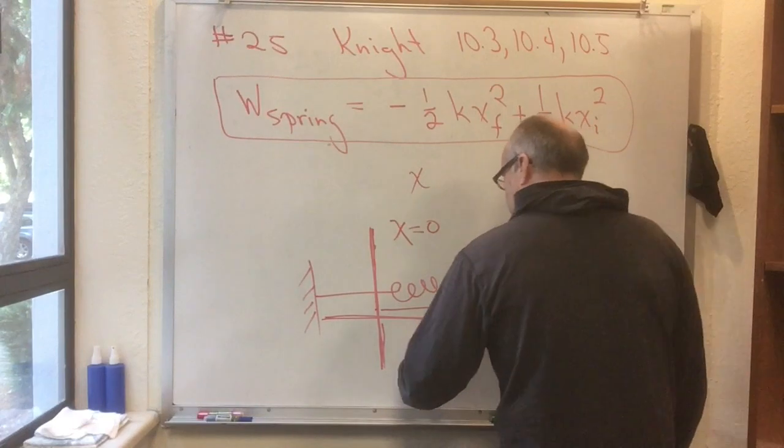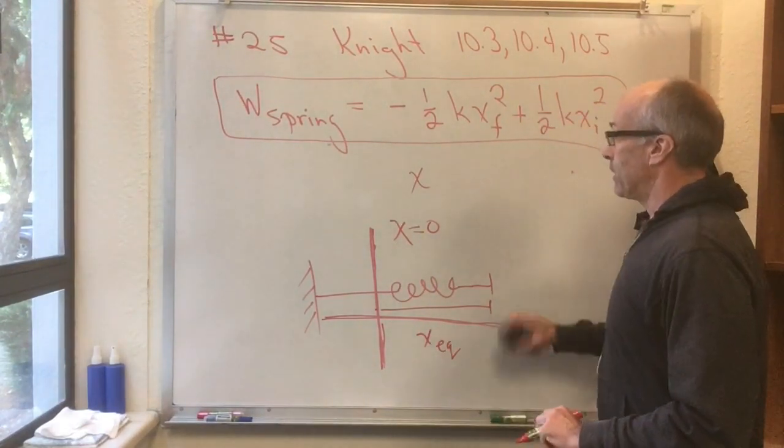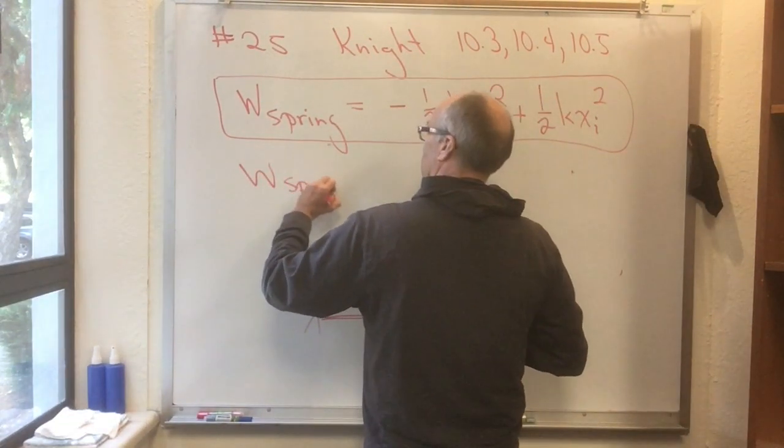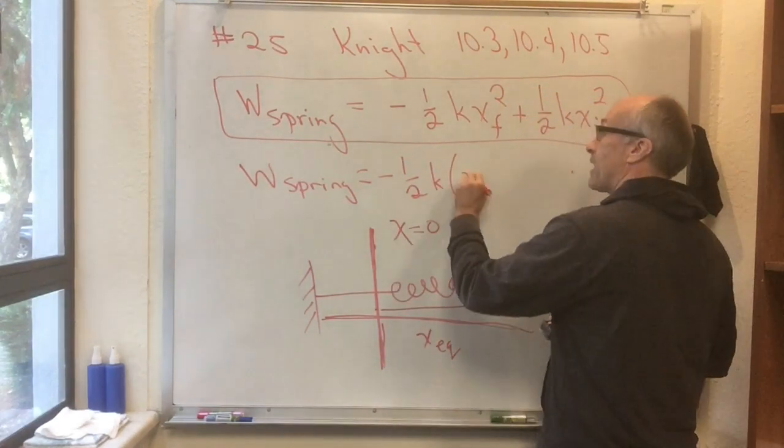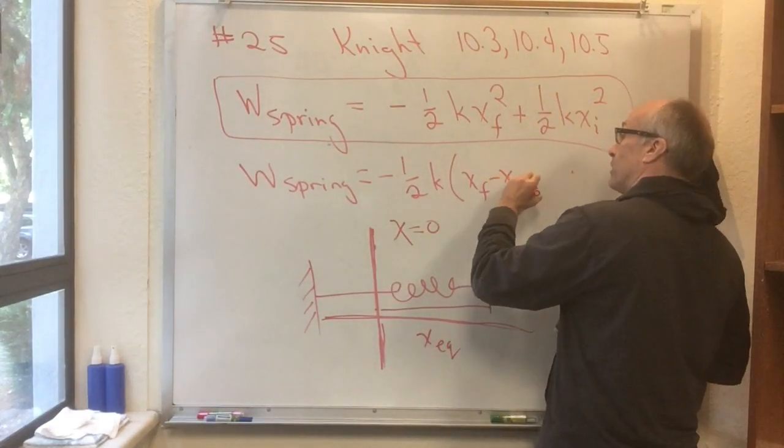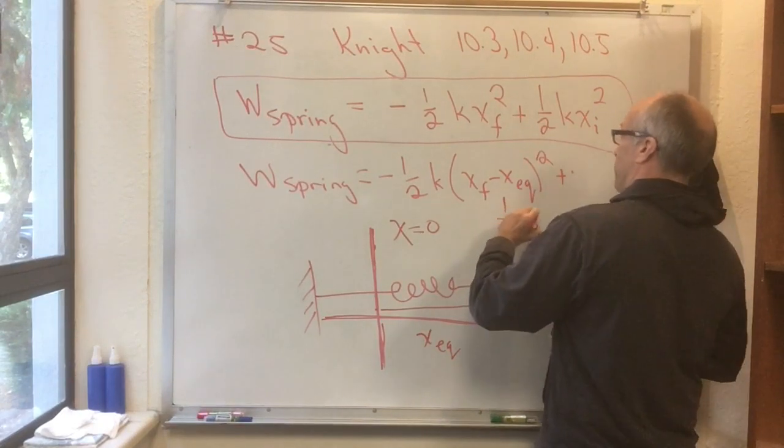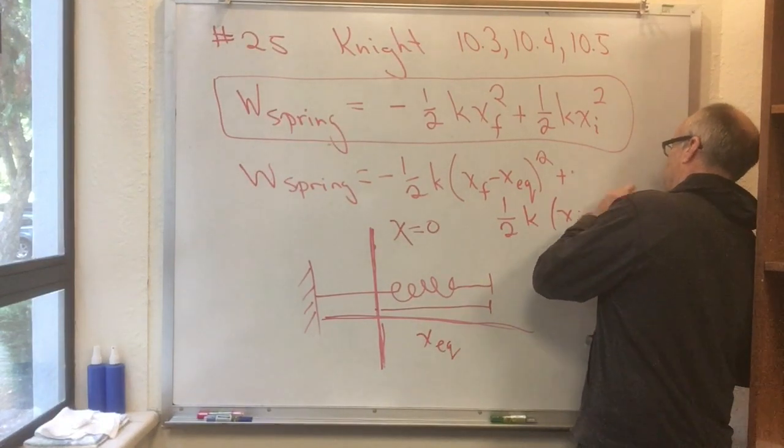Then this formula would have changed. It would have been that the work done by a spring is equal to minus a half k, and then it would be x final minus x equilibrium squared, plus one half k x initial minus x equilibrium squared.